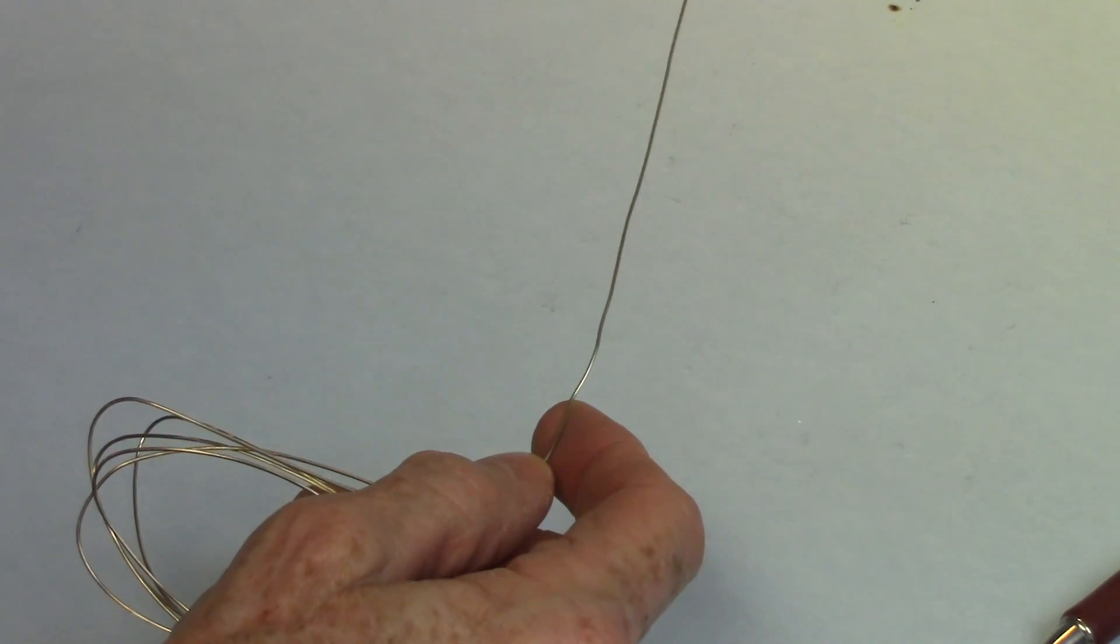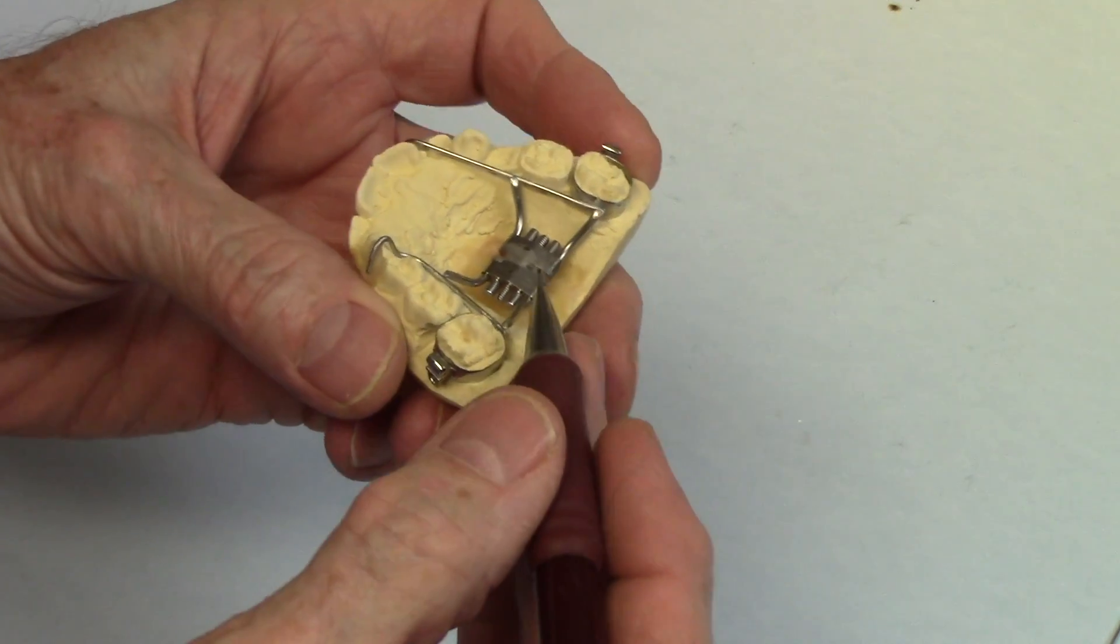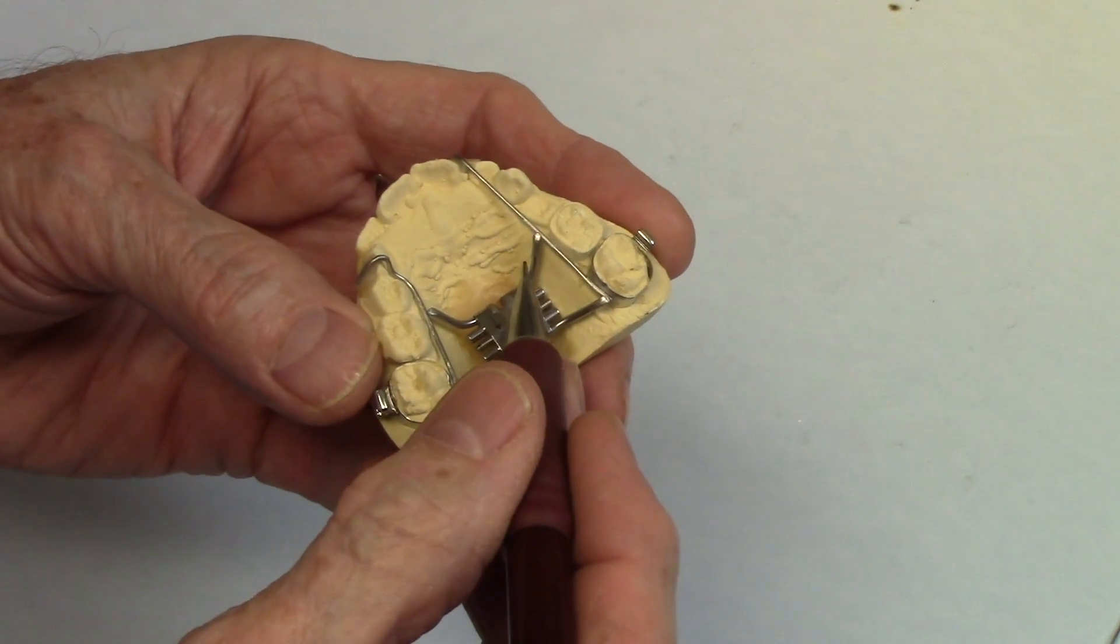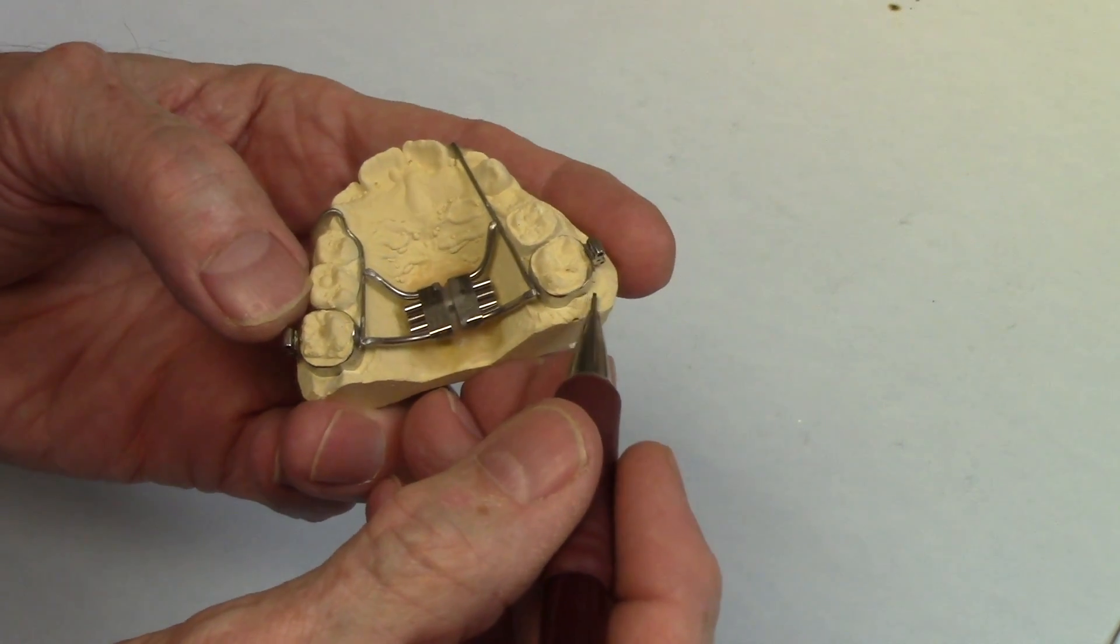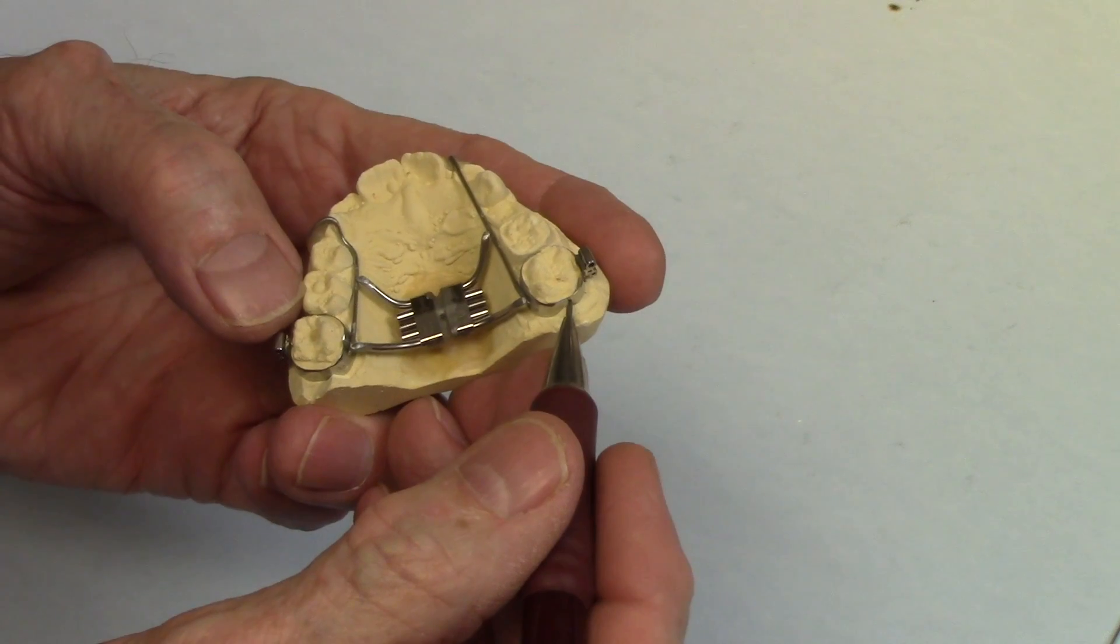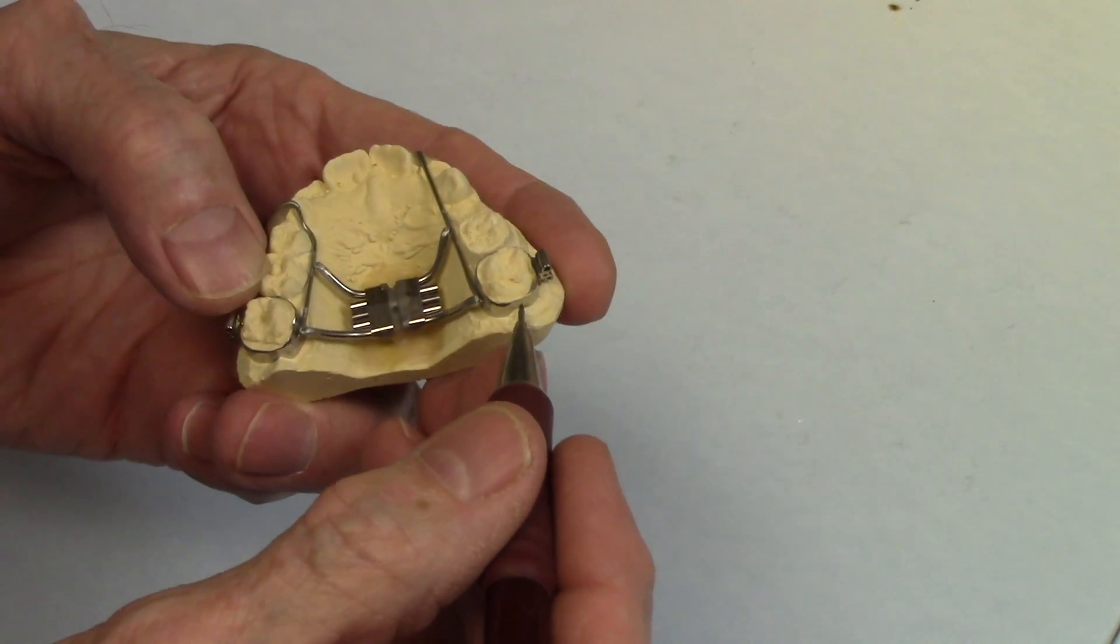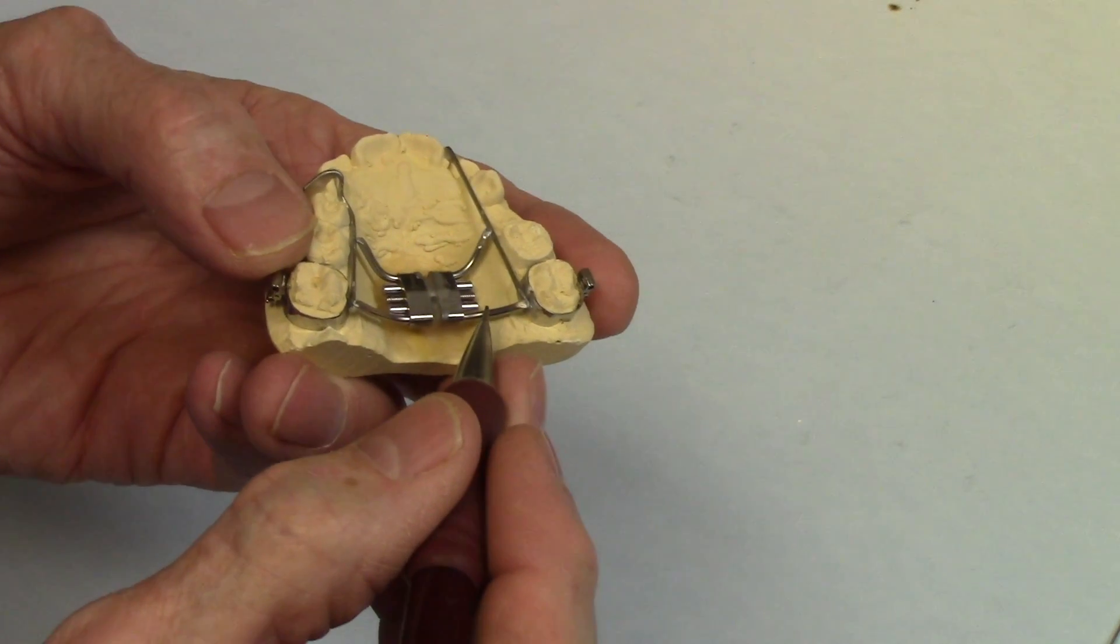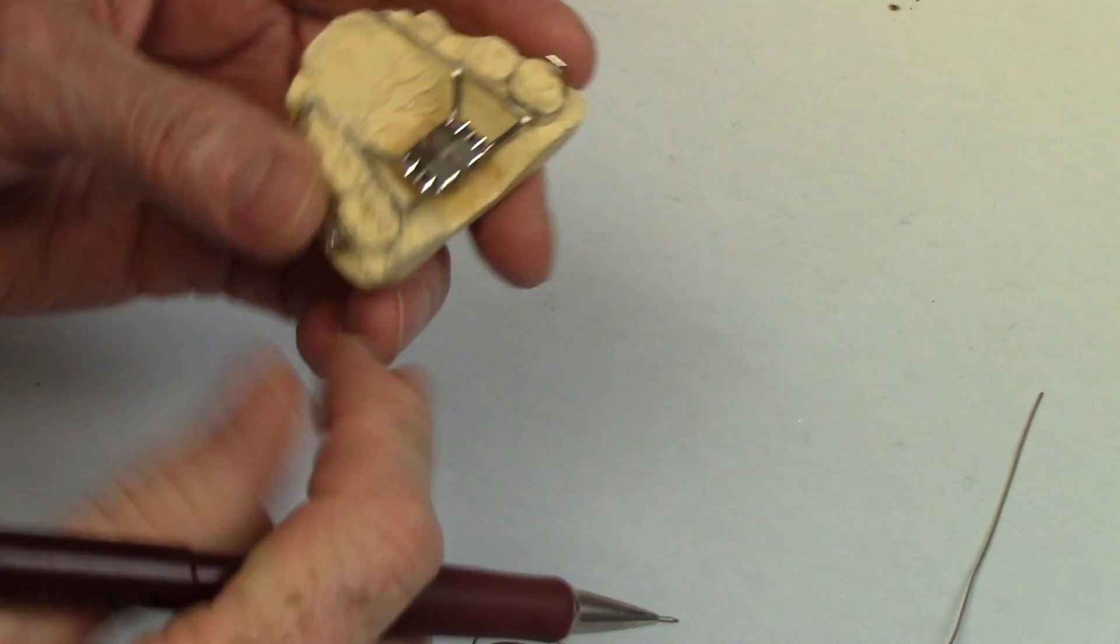Now we also have what's called the parent metals. This is a rapid palatal expander appliance we're getting ready to solder. I'm going to solder at these four points here. These wires are nickel and chromium. This band, the manufacturer says it's stainless steel. Steel is made by putting carbon in iron, and then to make it stainless steel, you add chromium. So this is at least a carbon-iron-chromium alloy, but it could have some nickel in it—we don't really know. But we know that these wires are nickel and chromium. So we'll be soldering the filler material to these parent metals.